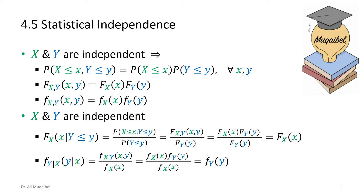In probability, we mentioned that if the joint probability equals the multiplication of the individual probabilities for any value of X and Y, we call them independent events. The best way to relate probability to two random variables is through the CDF, which is why we write P(X ≤ x, Y ≤ y), where capital X and Y are the random variables and small x and y are specific values.